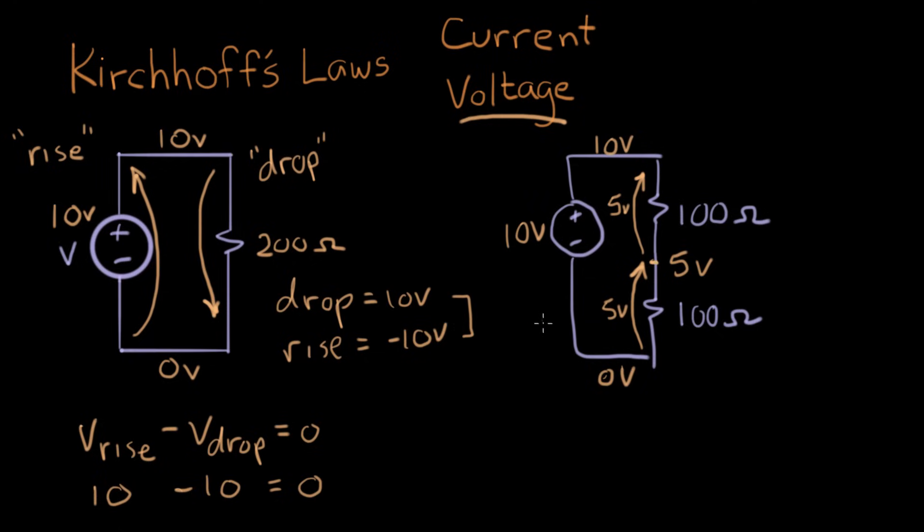So let's just do our visit again. Let's start here and count the rises and drops. We go up 10 volts. Then we have a voltage drop of five, and we have another voltage drop of five, and then we get back to zero. We can write the sum of the rises and the falls, just like we did before. We can say 10 volts minus five minus five equals zero.